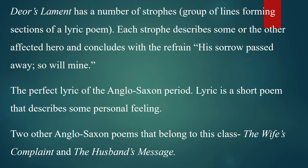Deor's Lament has a number of strophes. A strophe is a group of lines forming a section of a lyric poem. Each strophe describes some afflicted hero and concludes with the refrain: 'His sorrow passed away — so will mine.' Deor's Lament is considered the perfect lyric of the Anglo-Saxon period. A lyric is a short poem that describes some personal feeling. Two other Anglo-Saxon poems belong to this class: The Wife's Complaint and The Husband's Message.